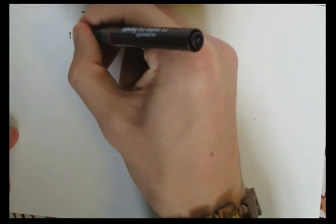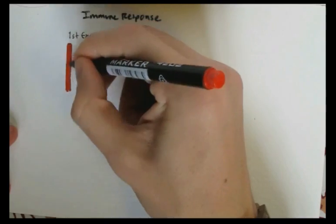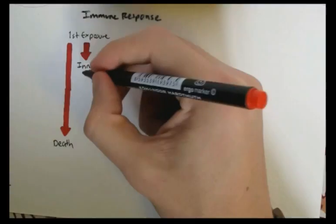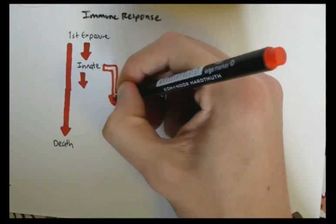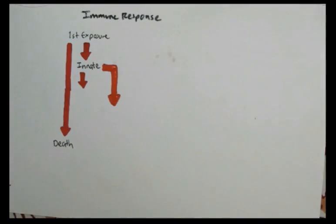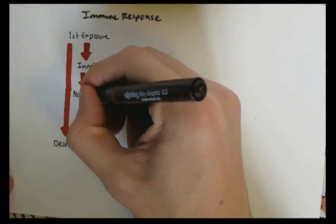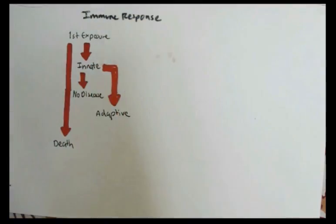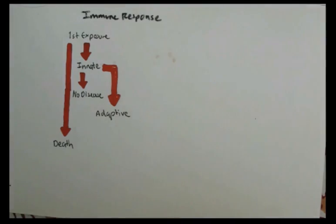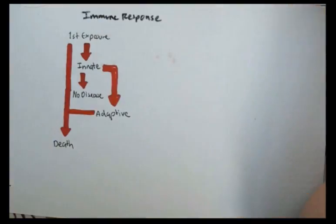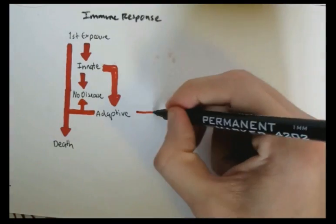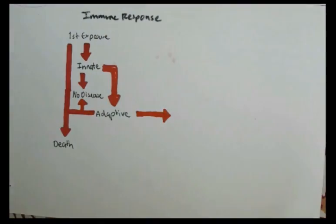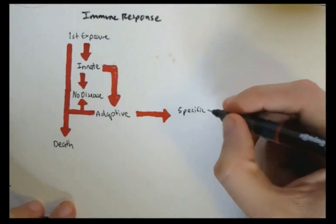Let's just say we have a first exposure to a certain disease. There are two outcomes. There is either death, or the innate immunity kicks in. The innate immunity can cause the disease to disappear, or the adaptive immunity has to kick in. The adaptive immunity, if it doesn't work, can lead to death, or it can get rid of the disease, which will then create that specific memory of that disease.